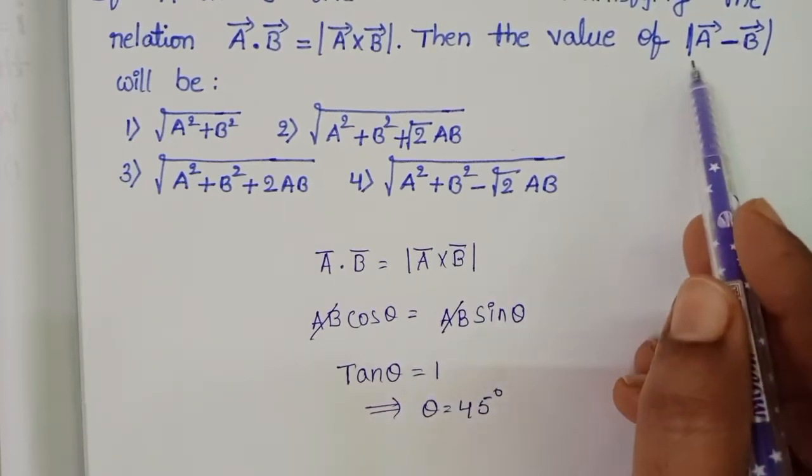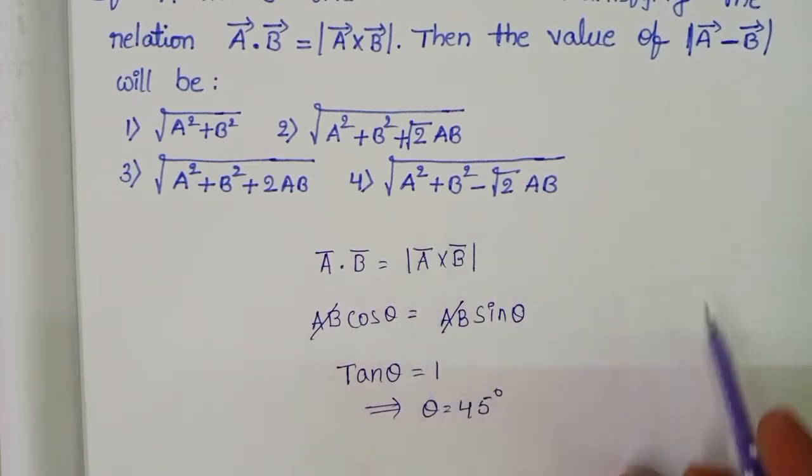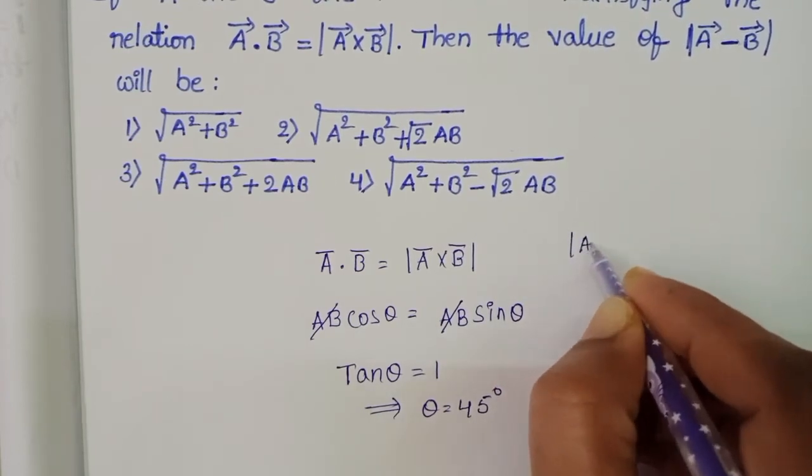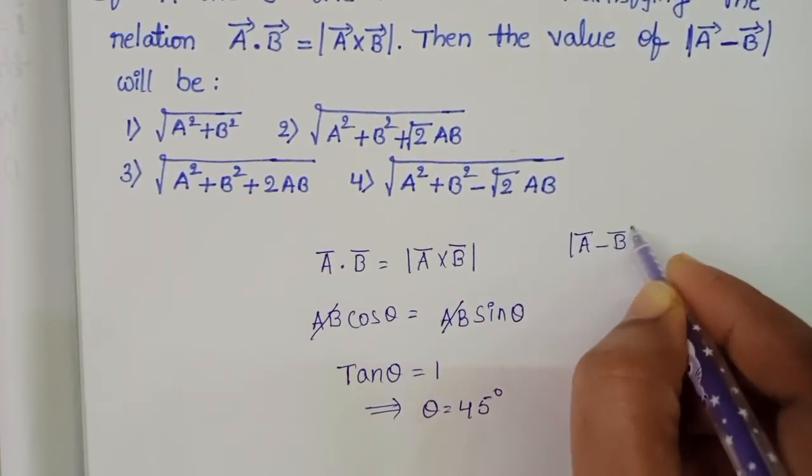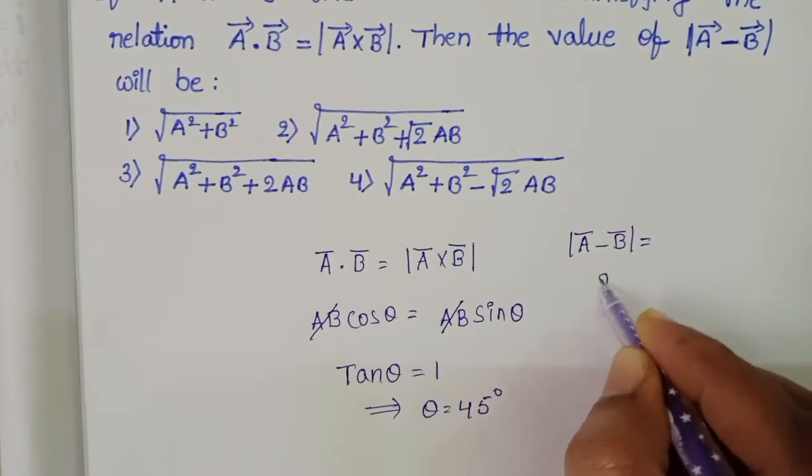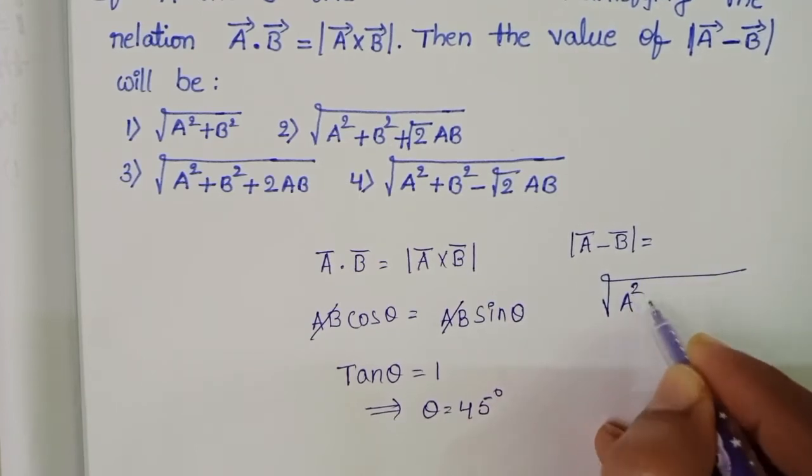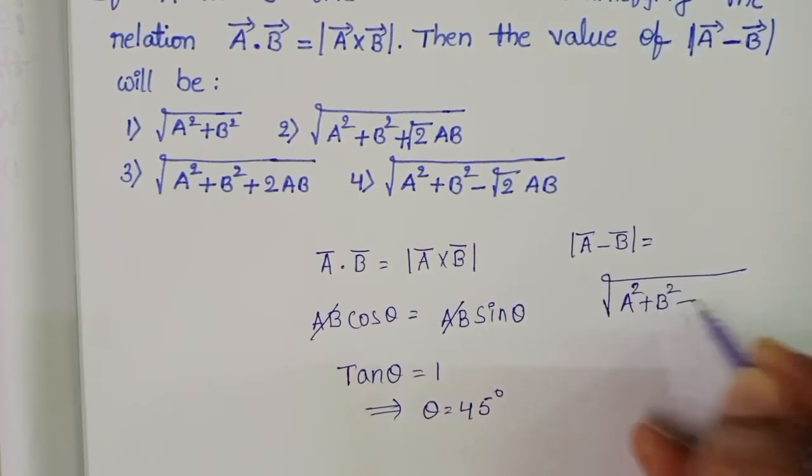Here we have to find out the value of mod A bar minus B bar. Mod A bar minus B bar equals square root of A square plus B square minus 2AB cos theta.